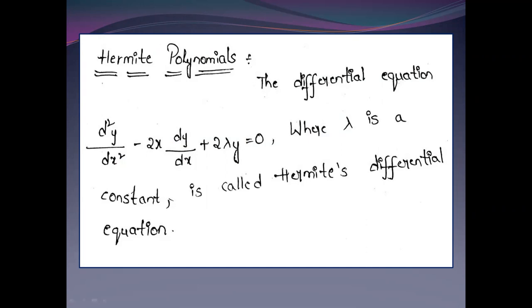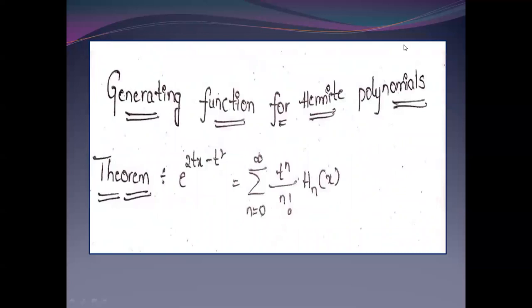This is the Hermite Polynomial Hn(x). This is the generating function. We will find that: e to the power of (2tx minus t²) is equal to the sum from n equals 0 to infinity of t^n divided by n factorial, times Hn(x).